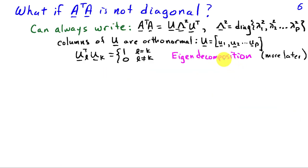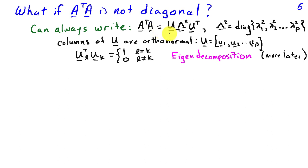Both two-dimensional examples so far have had AᵀA diagonal. The case where AᵀA is not diagonal can be handled in a similar fashion with a slight twist. AᵀA can always be expressed as a decomposition U Λ² Uᵀ — this is the eigendecomposition of AᵀA, a topic we'll look at in detail in another lecture. For now, what's important is that Λ² is a diagonal matrix with values λ₁², λ₂², ..., λₚ² on the diagonal, and the columns of U are orthonormal.